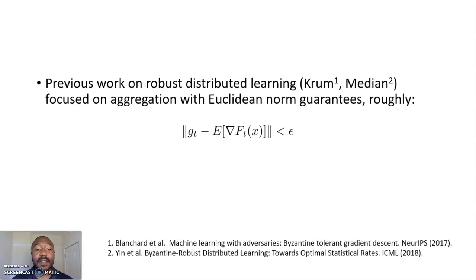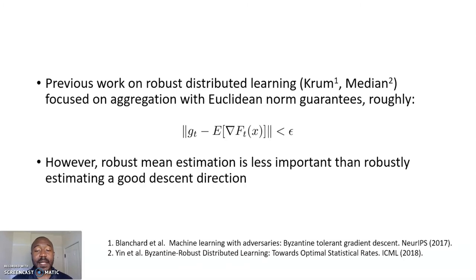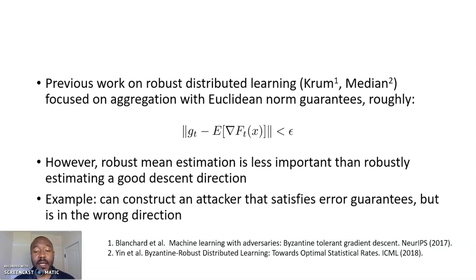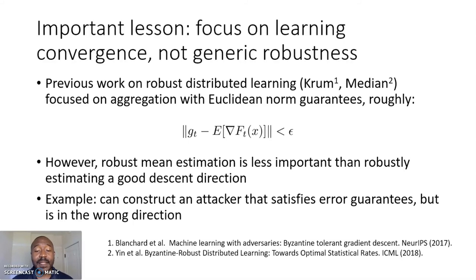However, in some recent work we have shown that one can construct an attack that satisfies this expected gradient error in terms of guarantees, yet points in the wrong direction. We call such manipulations inner product attacks. The key insight is that for optimization problems and for learning problems, robust mean estimation is less important than robustly estimating the right descent direction.